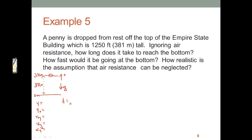We don't know T. So how fast would it be going at the bottom? Can't answer that off the top because I don't know the time. A sub y will be negative 10 meters per second squared for gravity. Vy is what I want to know. V naught y is 0 because it's dropping from rest. Y naught is going to be 381 meters, and y will be 0 meters.